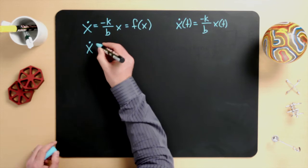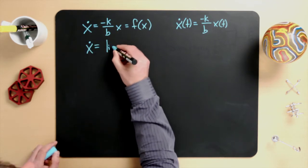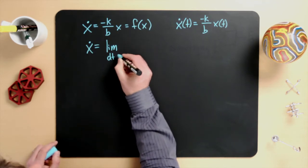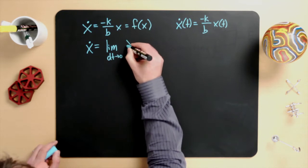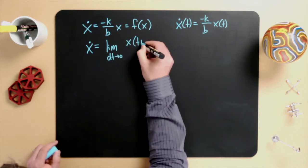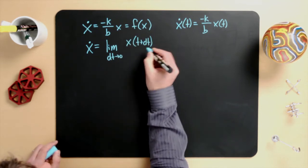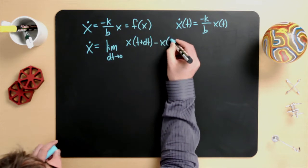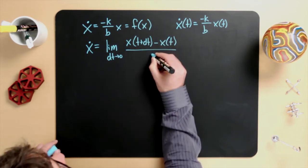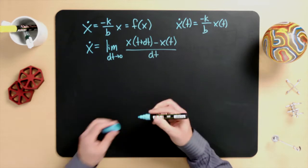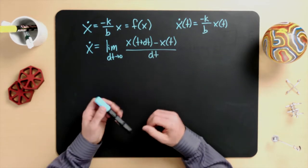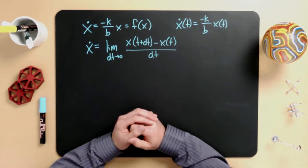If we now look at the left-hand side, we see that the derivative of x of t with respect to t, which by definition is equal to x-dot, is equal to the limit as dt goes to zero of x of t plus dt minus x of t, all divided by dt. That's just the limit from calculus that you've learned previously.